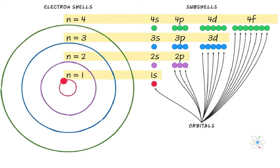By absorbing or emitting radiation in terms of photons, an electron can jump from one state to another — up when absorbing a photon, and down when emitting a photon. The model provides a good first-order approximation of the energy levels for a simple atom such as the hydrogen atom.